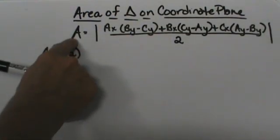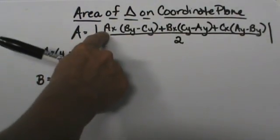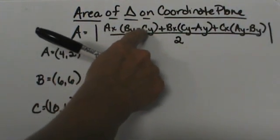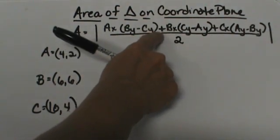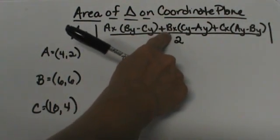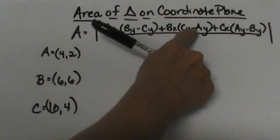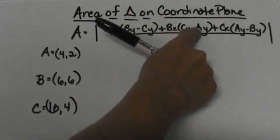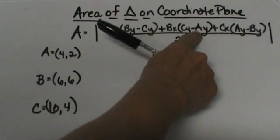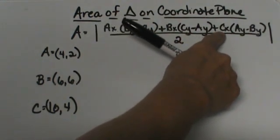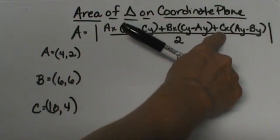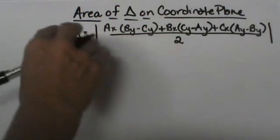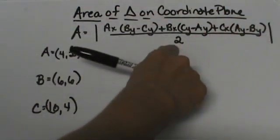The area of the triangle is equal to the x coordinate of A times the B y-coordinate minus the C y-coordinate plus the B x-coordinate times the difference of the C y-coordinate and the A y-coordinate. Then I'm going to take C's x-coordinate and subtract the y coordinate of A and B. Then once I get that sum I'm going to divide it by 2.